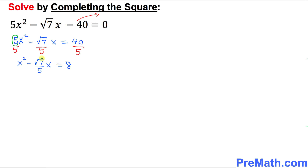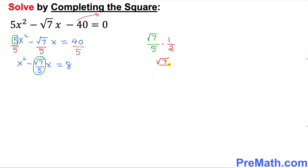The next step is to look at the coefficient of x. Don't worry about the negative sign — just write down √7 over 5. Then multiply that fraction by 1/2, which is the same as dividing by 2. Simplifying gives us √7 divided by 10, since 2 times 5 is 10.